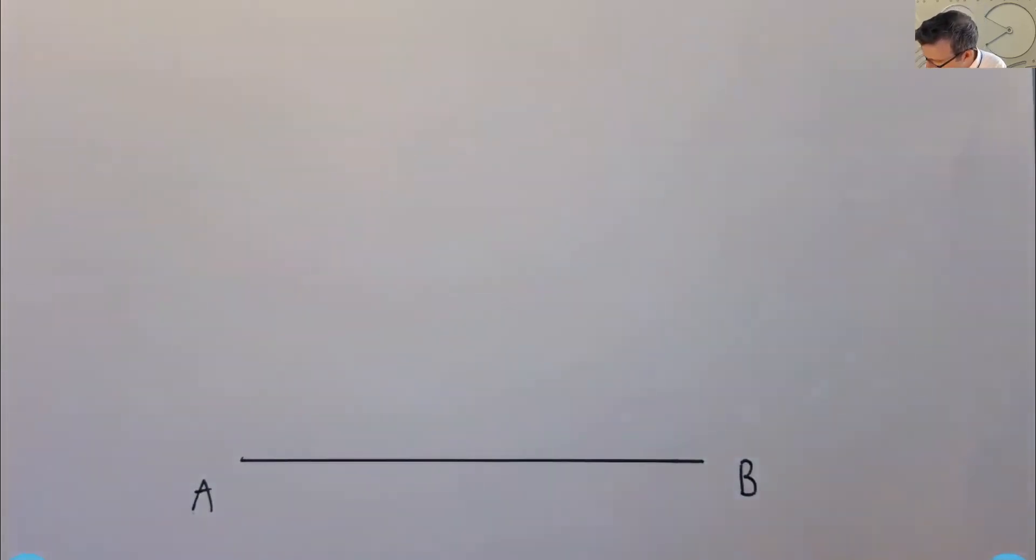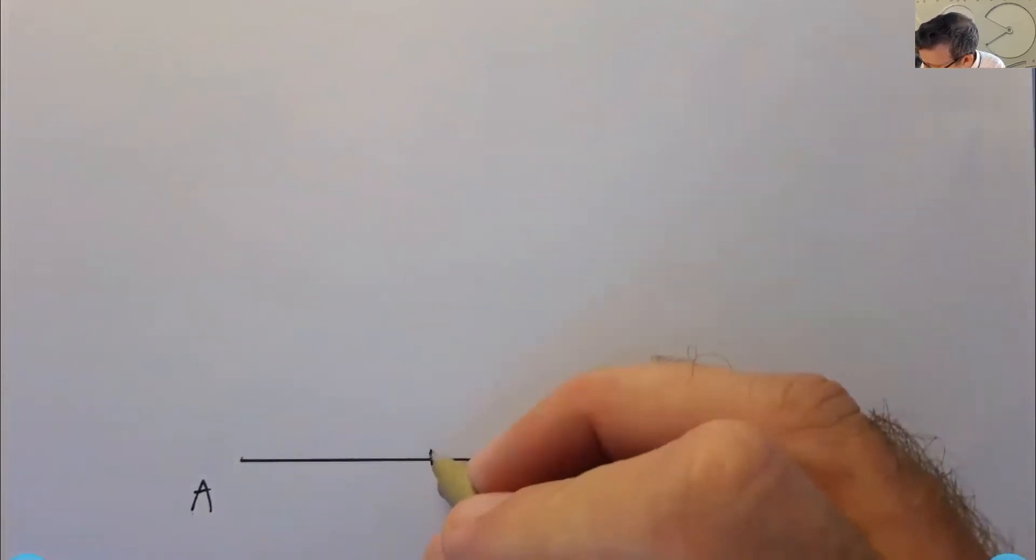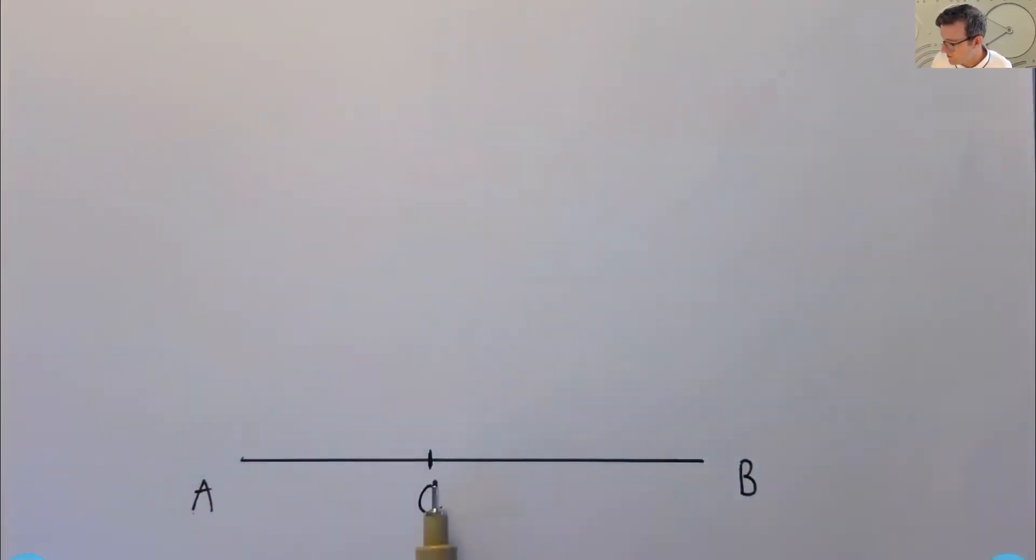And suppose that we want to have another point, C. And what we want to do from C, we want to cut off a line segment that's equal in length to AC. So we want to find a new point such that the distance from C to this new point is the same as the distance from C to the endpoint A.